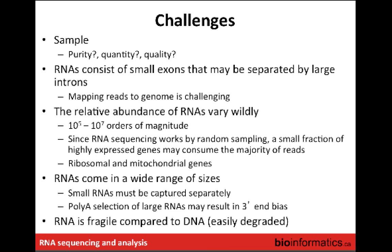Another challenge particular to RNA-seq is that RNAs consist of small exons separated by very large introns in many species. This creates an alignment challenge relative to whole genome sequencing — in whole genome sequencing, most reads are expected to align as one contiguous block. RNA-seq aligners have the additional challenge of finding reads where part of the read maps to the edge of one exon, then there could be 50 kb of intron, and the rest of the read aligns to the next exon. This is computationally challenging and increases alignment uncertainty.